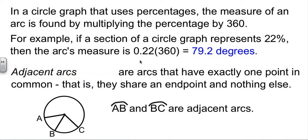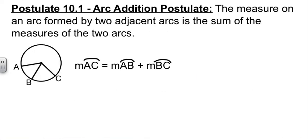Adjacent arcs are arcs that are next to each other. They share an endpoint and nothing else. So AB and BC would be adjacent arcs. They don't have any other points in common other than B. And just like we had with segment addition postulate back in the day, and just like we did with angle addition postulate, now we have the arc addition postulate.